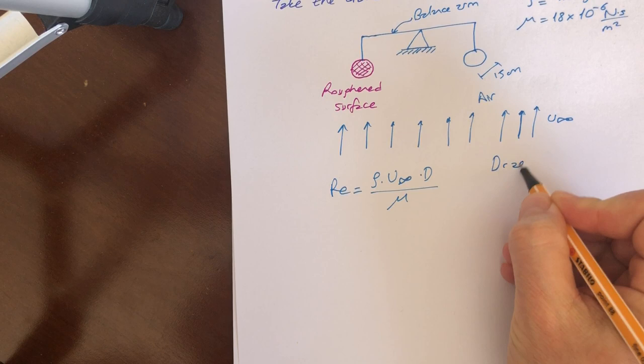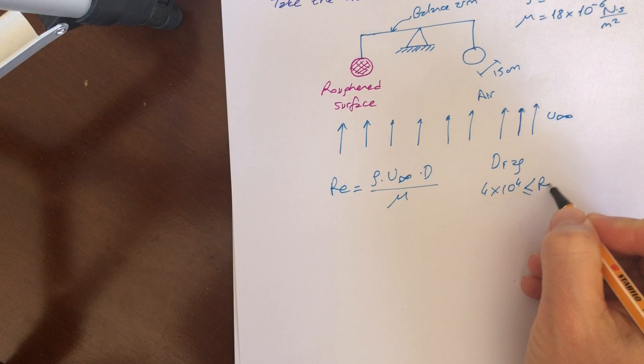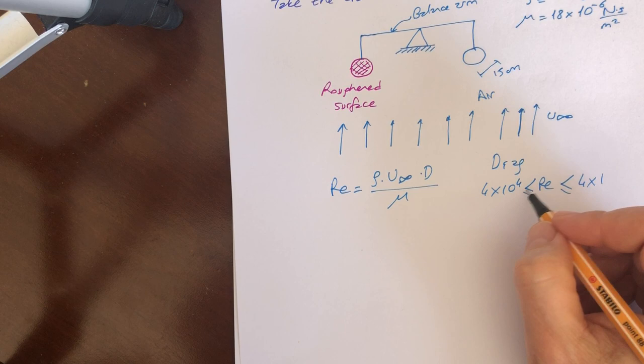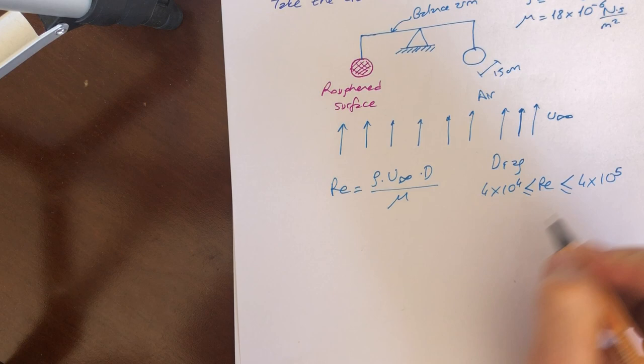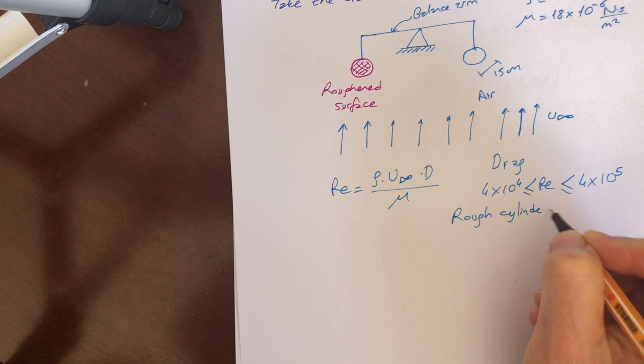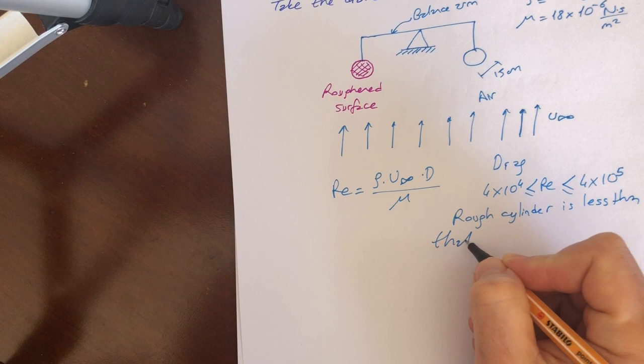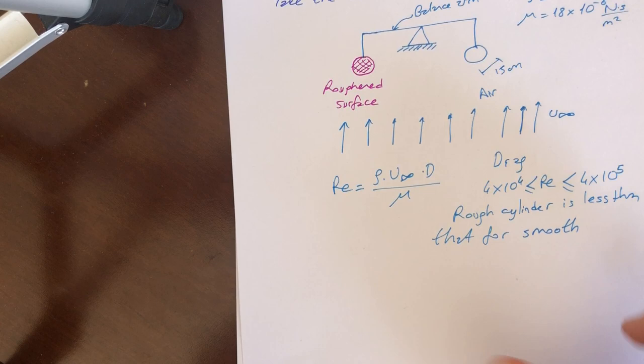If the value of Reynolds number is between 4 by 10 to the 4 and 4 by 10 to the 5, in this case, rough cylinder drag is less than that for smooth one. We know this one from fluid mechanics books or text.